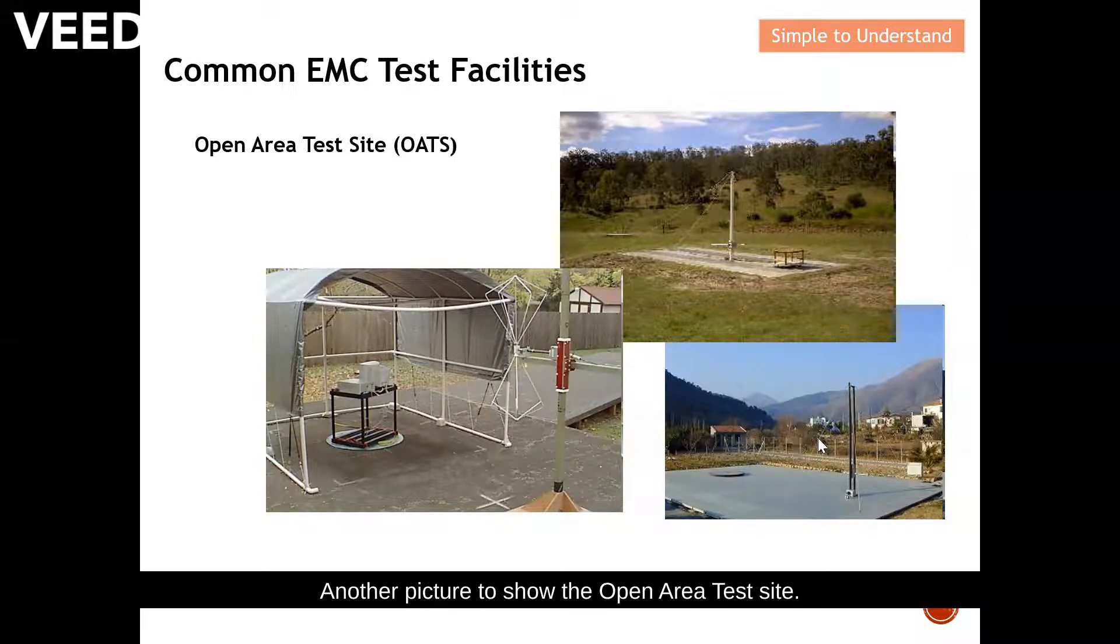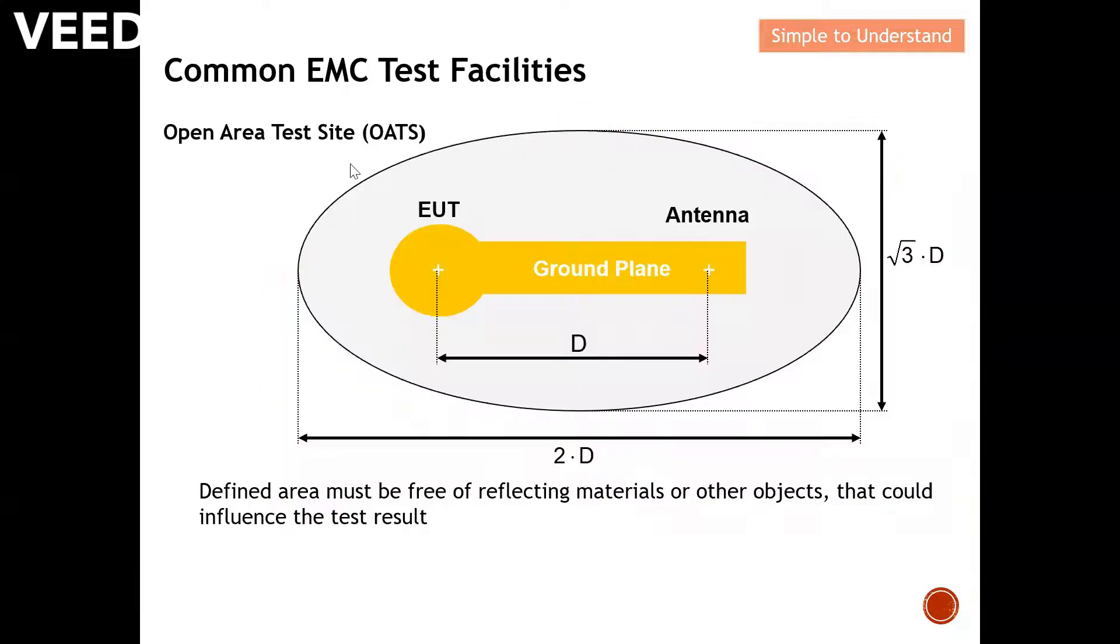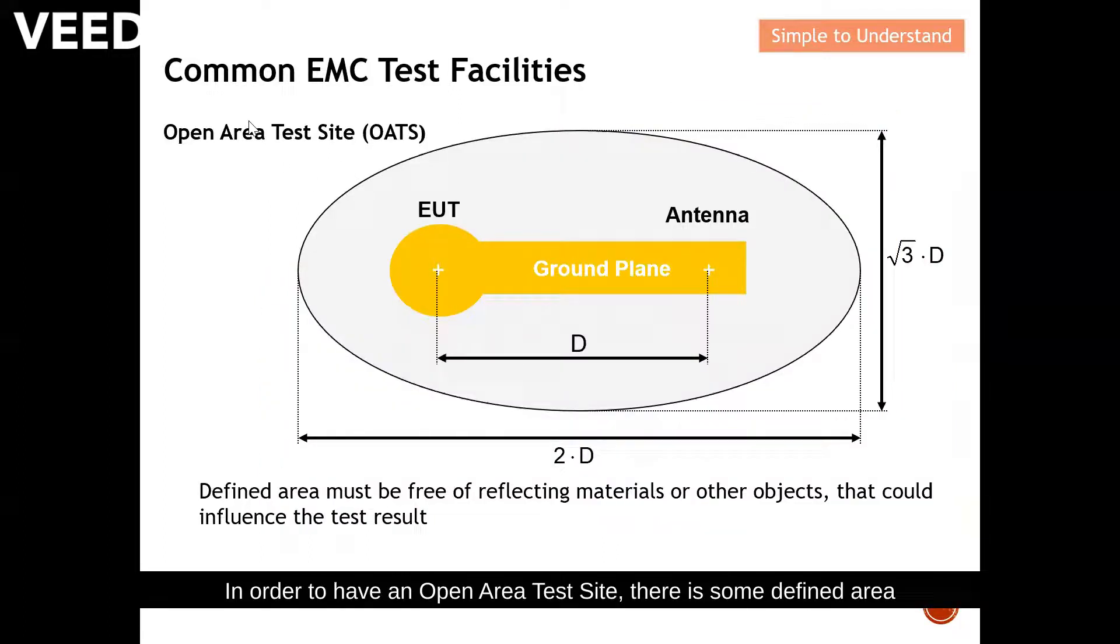Another picture to show the open area test site. In order to have an open area test site, there's some defined area that must be free of refracting materials or other objects that could influence the test result. This is the picture that we see earlier. This is where you put your EUT or DUT, this is your antenna.